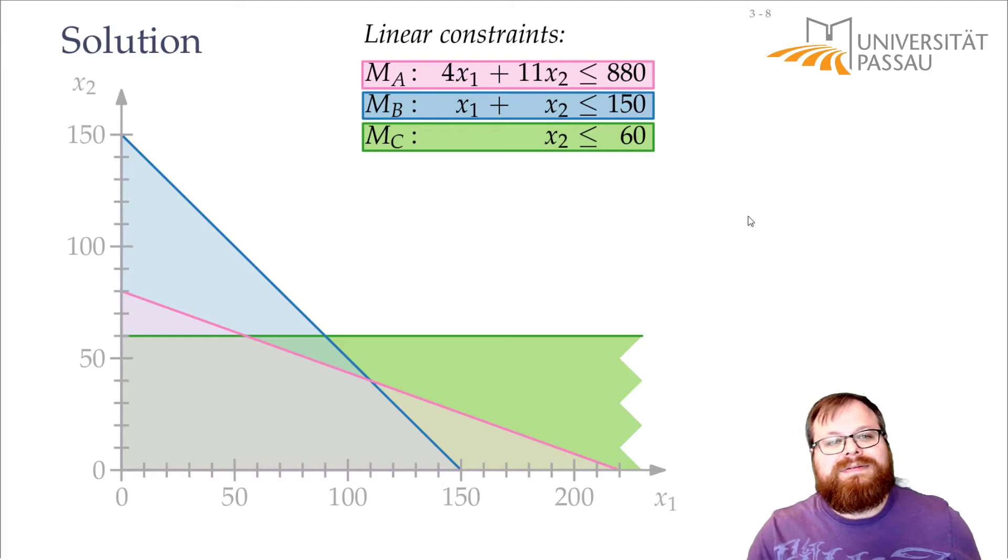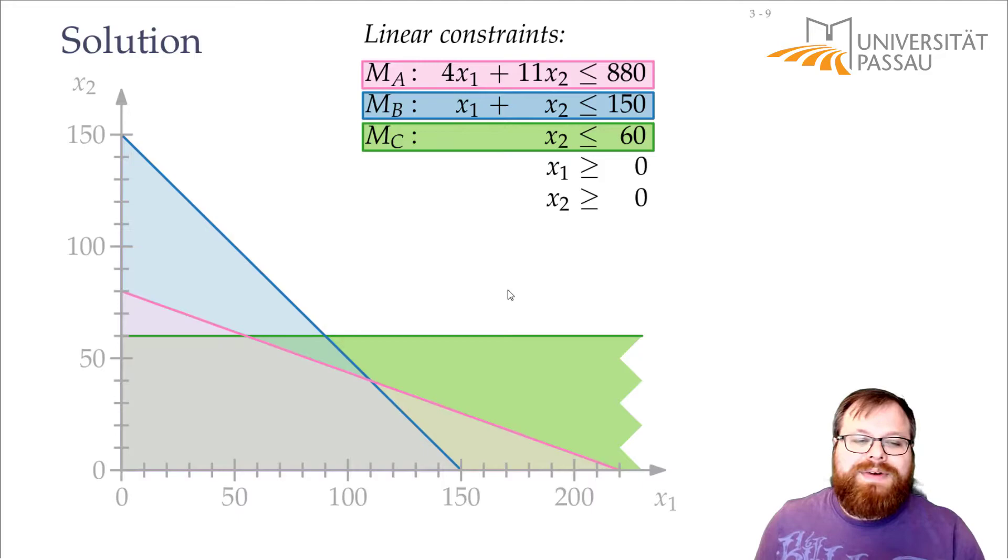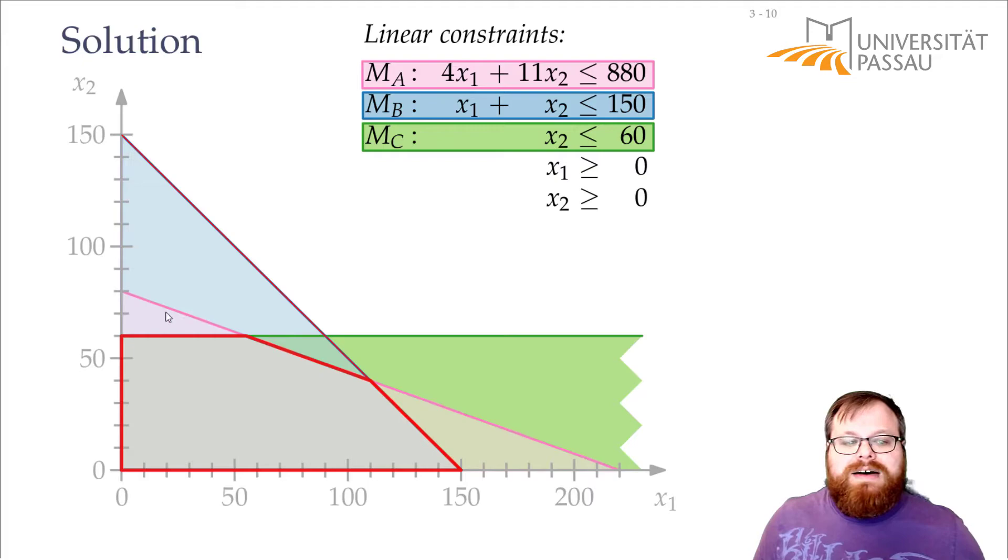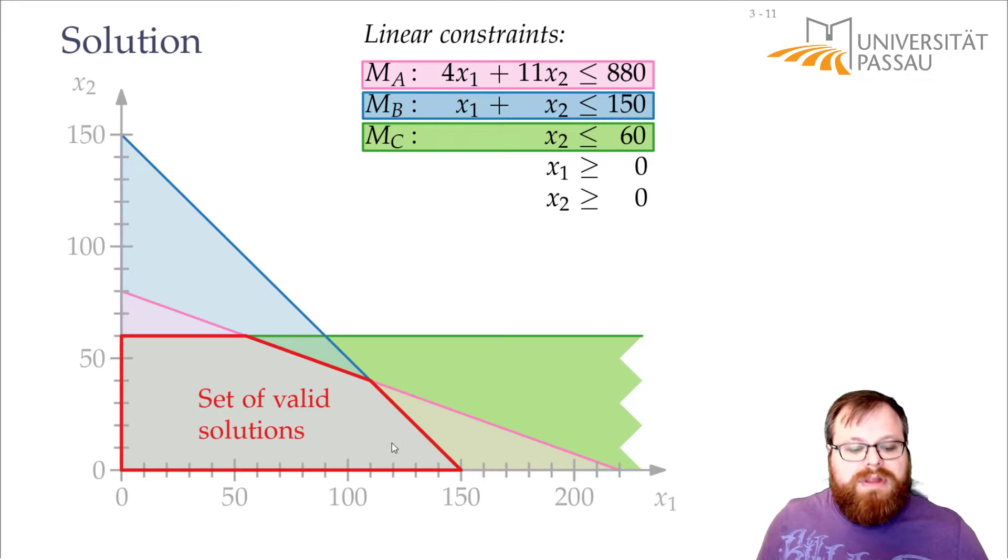The same way this gives us a half plane. And also we cannot produce negative amount of something. So both of those have to be at least 0. And that gives us all the valid solutions, which lie in this polygon. And it's basically the intersection of all these half planes. And the two half planes above x1 equals 0 and to the right of x2 equals 0.